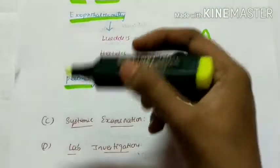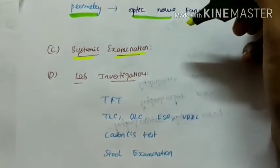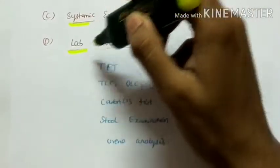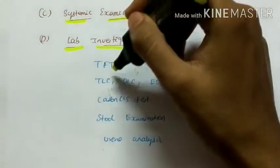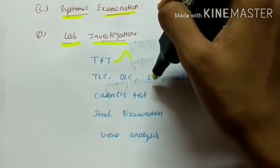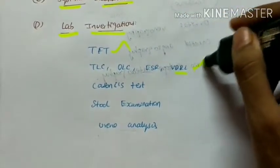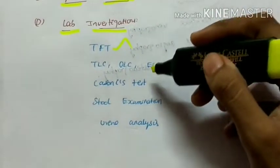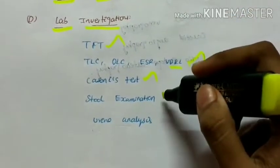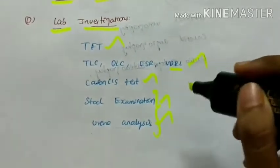Systemic examination is performed to check for associated systemic syndromes or endocrine abnormalities. Lab investigations include thyroid function test, total leukocyte count, differential leukocyte count, erythrocyte sedimentation rate, and VDRL for syphilis. Casoni's test is done to detect hydatid cysts, and stool examination and urine analysis are performed to check for parasites.